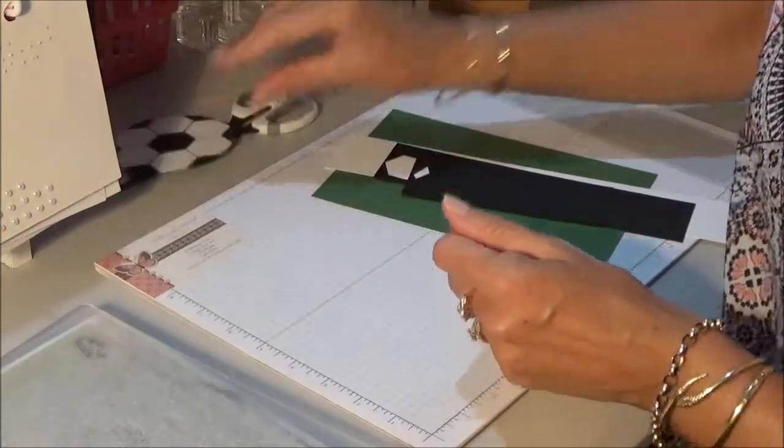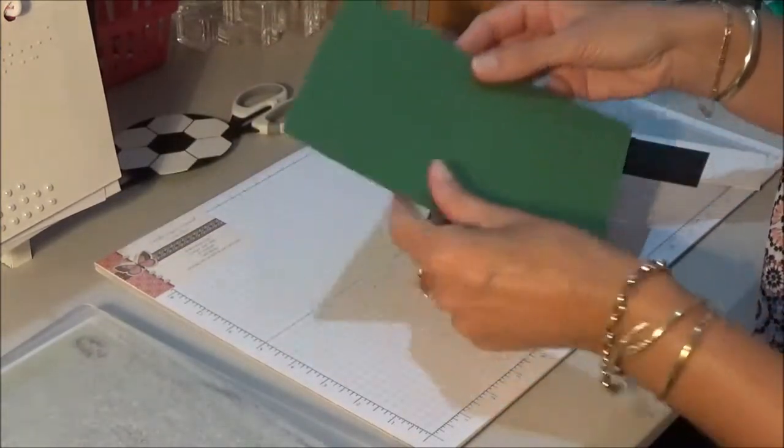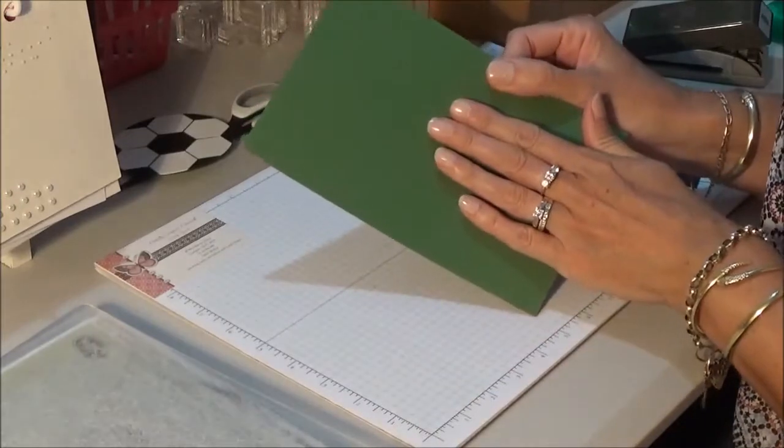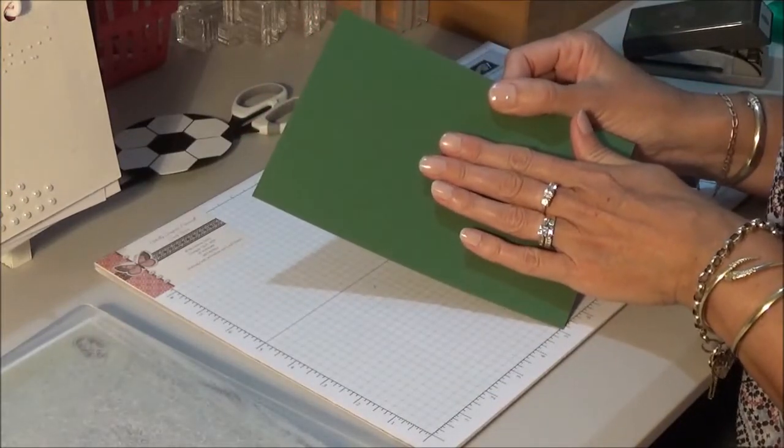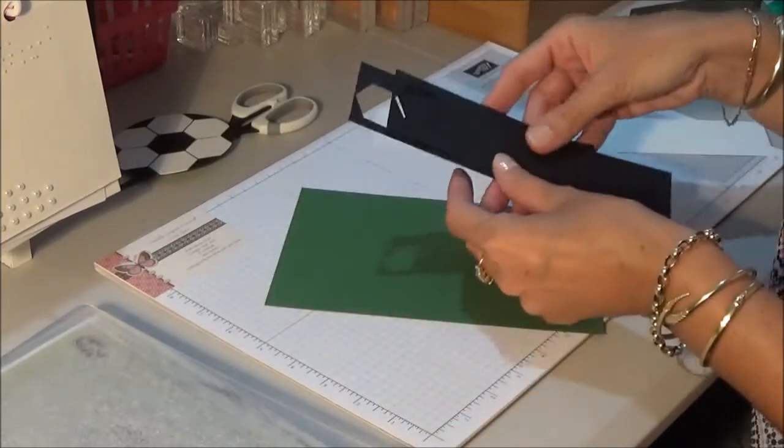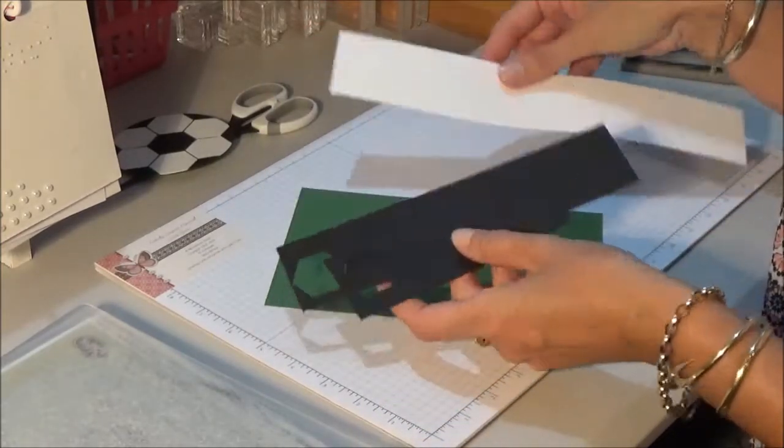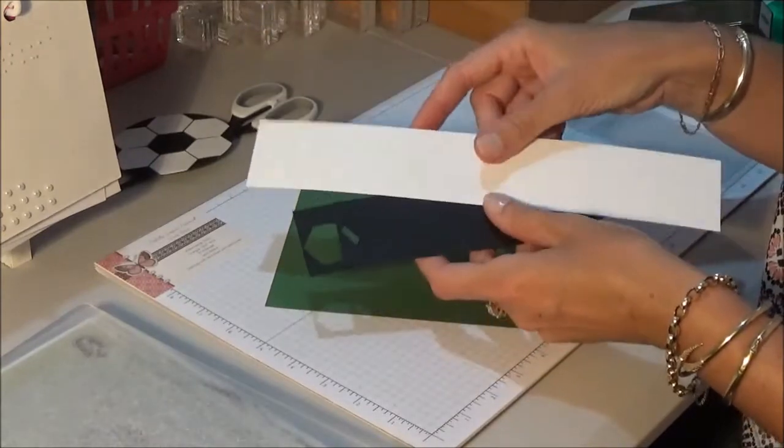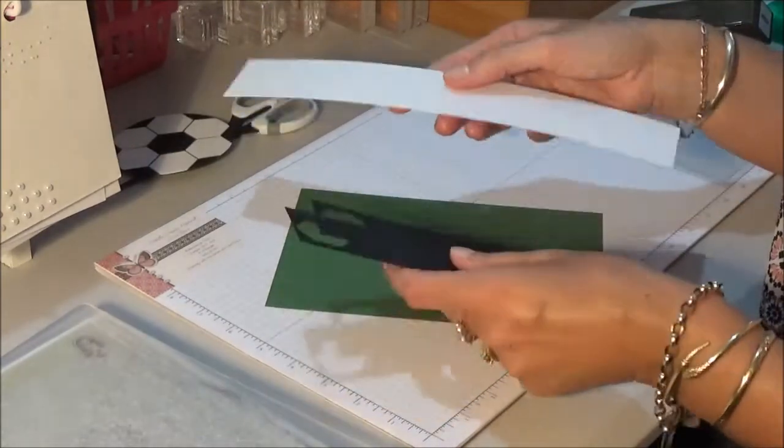So all you're going to need is some garden green cardstock, or if you don't have garden green any shade of green will be fine. Some basic black and some whisper white, and your scraps are perfect for this.